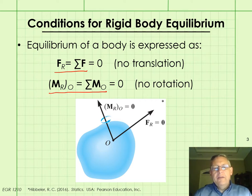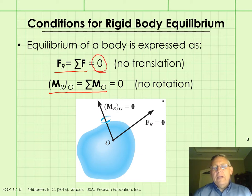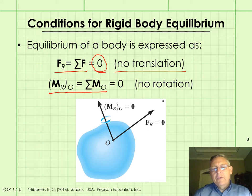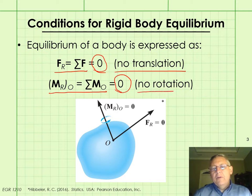For equilibrium of the body to exist, that resultant force must be equal to zero — just like particle equilibrium — meaning the body is not translating. And unlike particle equilibrium, the sum of the moments must also equal zero, meaning that the body is not rotating.